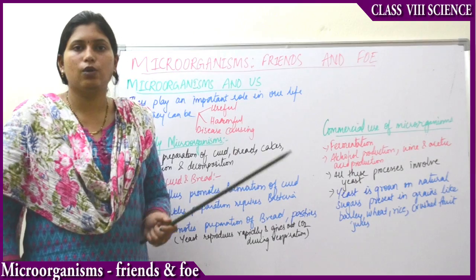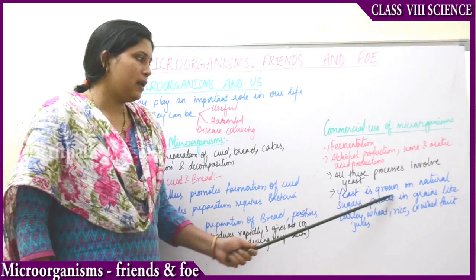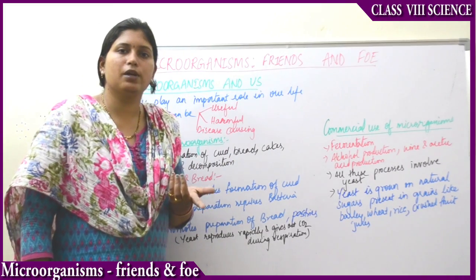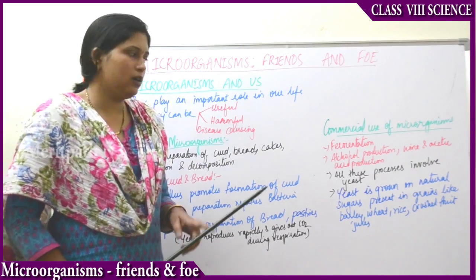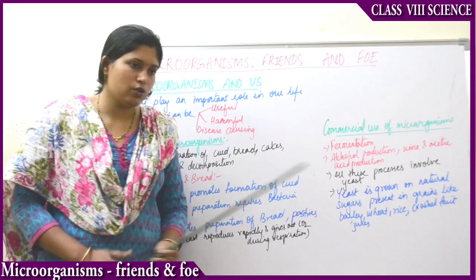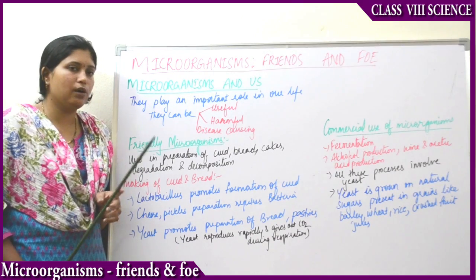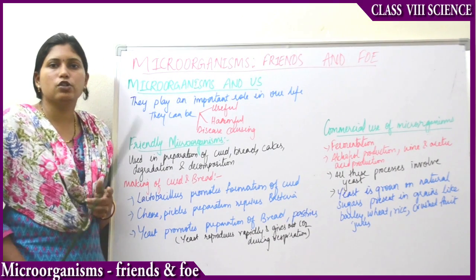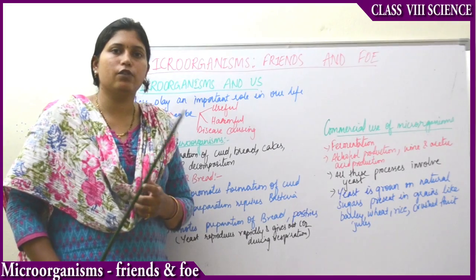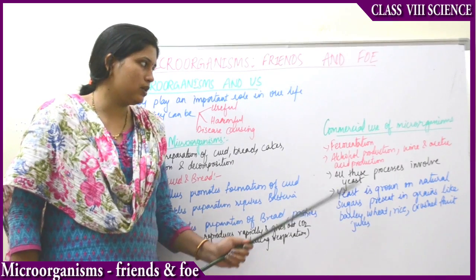Where does the yeast come from? Yeast is grown on natural sugars found in grains. Sugars like those in barley, wheat, rice, and crushed fruit juice are used. Grains are nothing but a source of carbohydrates — for example, rice is a carbohydrate, and carbohydrate is a source of sugar. That is how yeast is grown on rice and crushed fruit juices. This is how the commercial use of microorganisms is carried out.